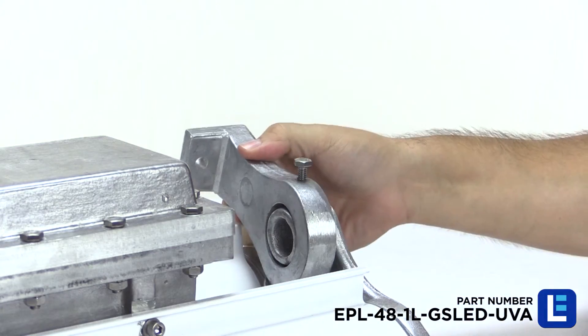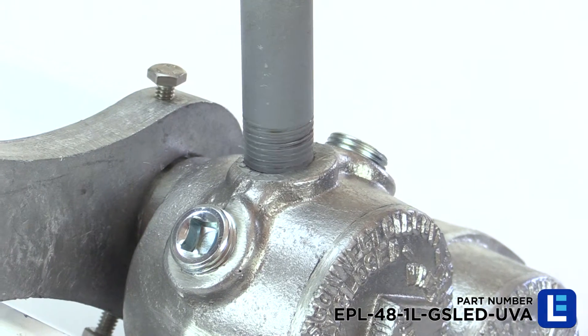A surface mount comes standard with an optional pendant mount available if needed to be suspended.